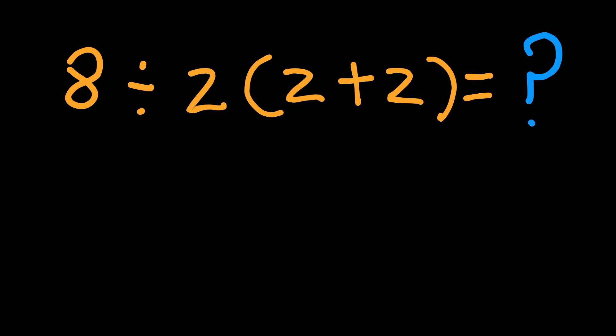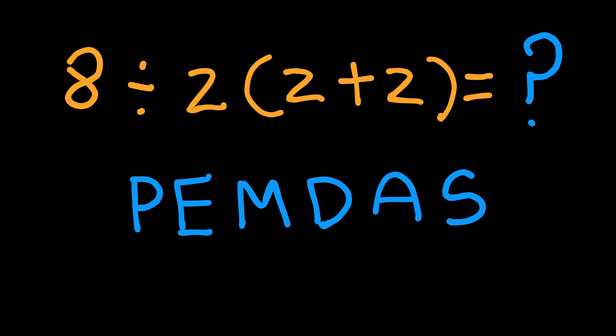you will finally understand why everyone gets it wrong. Most of us were taught this magical acronym: PEMDAS. P for parenthesis, E for exponents, M for multiplication, D for division, A for addition, S for subtraction. Simple, right? Wrong. The truth is, PEMDAS is often misunderstood.